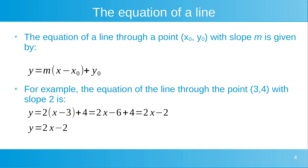Multiplying that out, we get 2x minus 6, plus 4. And evaluating that, we get 2x minus 2. So in this case, the equation of the line through the point (3, 4) with slope 2 is y is equal to 2x minus 2. Whatever value of x we substitute into this equation of the line, the equation returns the corresponding value for y for that line.